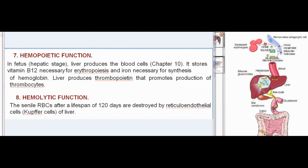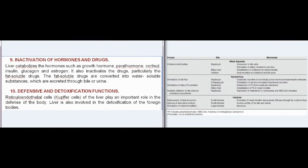Hemolytic function: senile RBCs after a lifespan of 120 days are destroyed by reticuloendothelial cells (Kupffer cells) of the liver. Inactivation of hormones and drugs: the liver catabolizes hormones such as growth hormone, parathormone, cortisol, insulin, glucagon, and estrogen. It also inactivates drugs, particularly fat-soluble drugs, by converting them into water-soluble substances which are excreted through bile or urine.